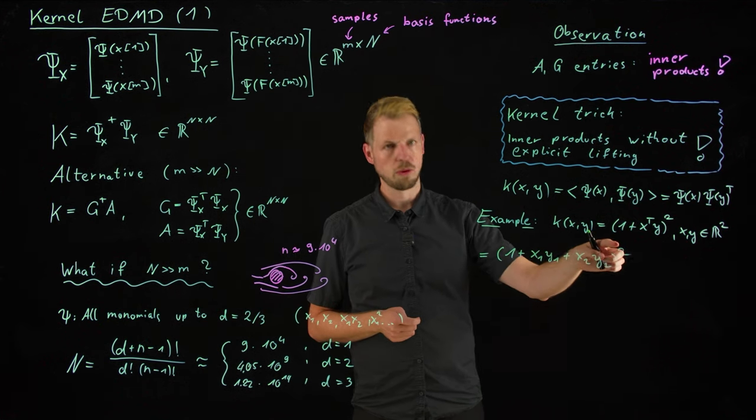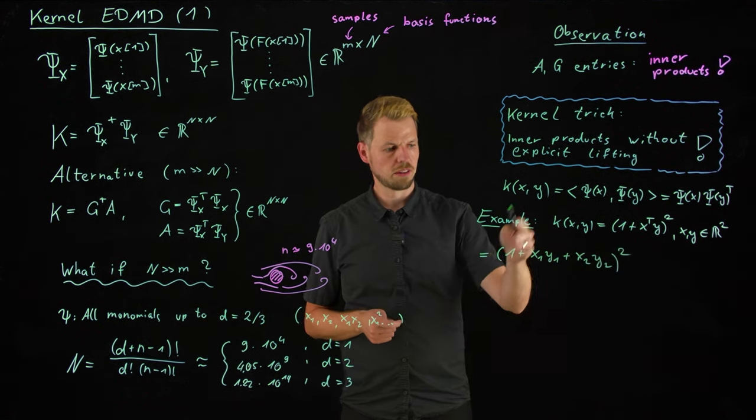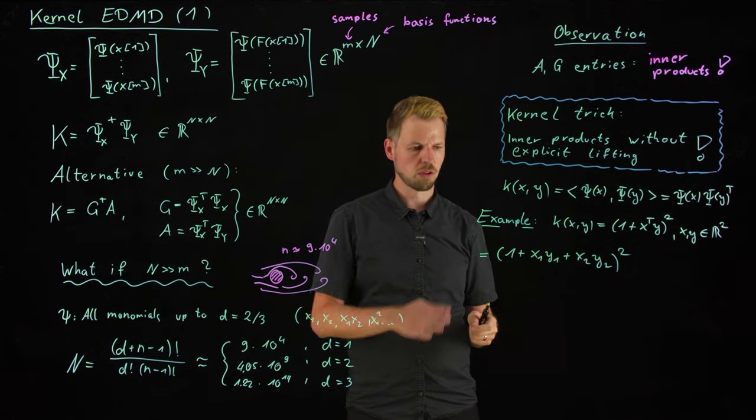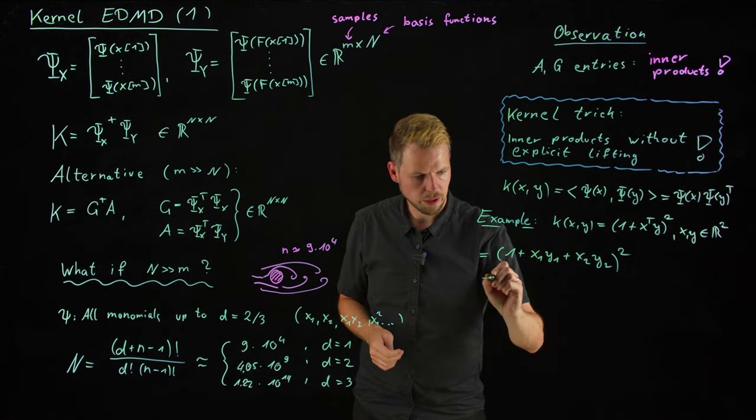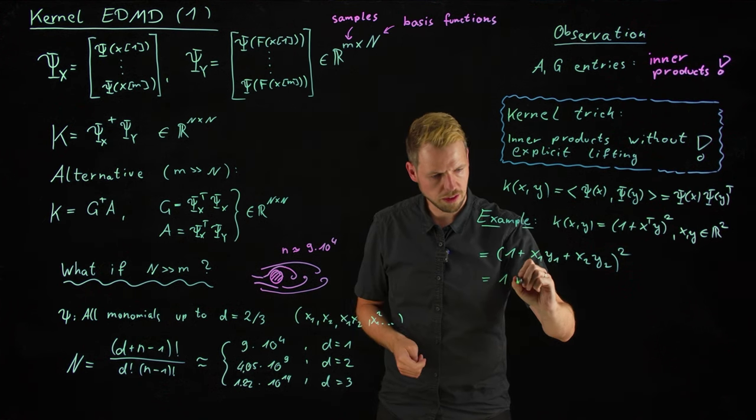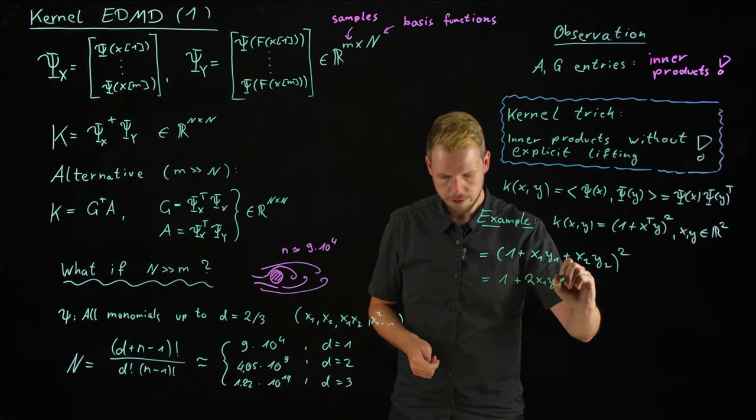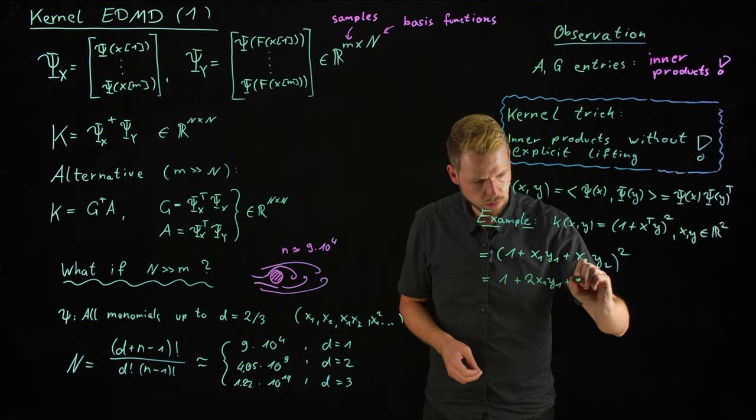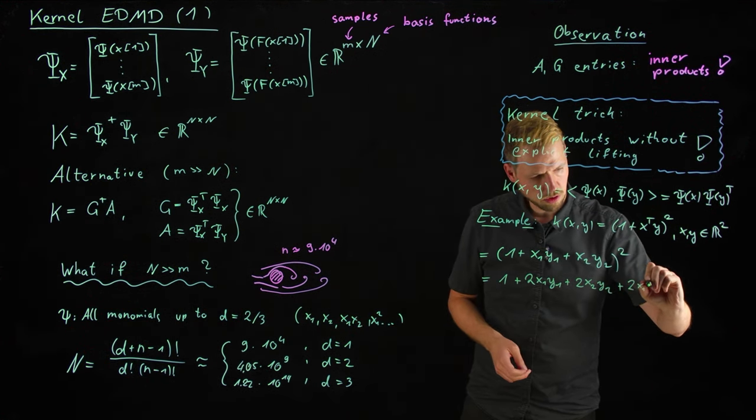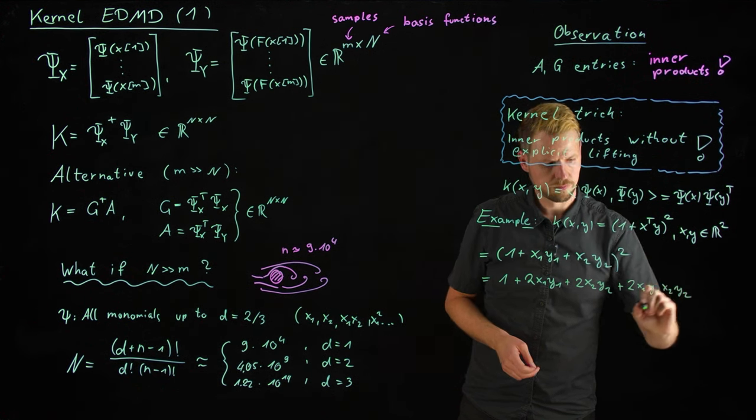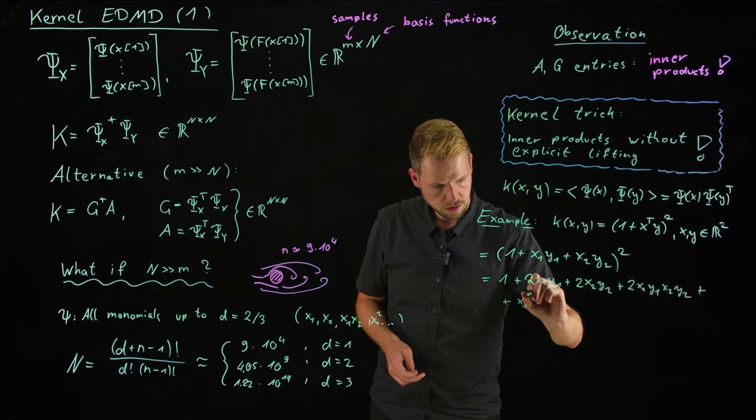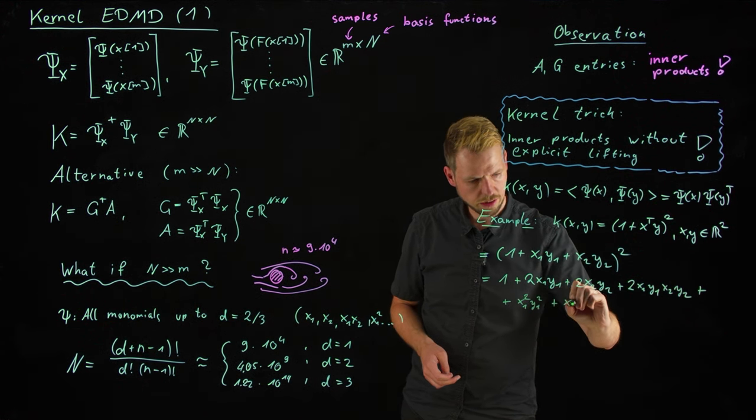And so now, you see, we have three terms, and we raise it to the power of 2, so we get in total nine terms: this times this, plus this times that, plus this times that, and so on. And so, because the order doesn't matter, we have several terms twice, so we have six distinct terms in the end. What we will get is 1 times 1 gives me 1, 1 times this gives me x1 y1, but later on, x1 y1 times 1 gives me the same, so what we get is 2 times x1 y1. And in the same fashion, we have 2 times x2 y2 plus 2 times x1 y1 x2 y2 plus x1 squared y1 squared plus x2 squared y2 squared.